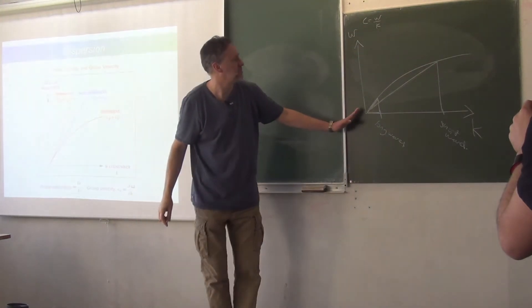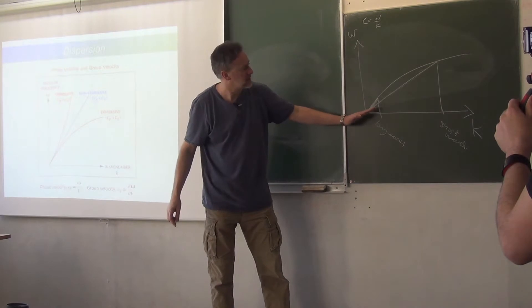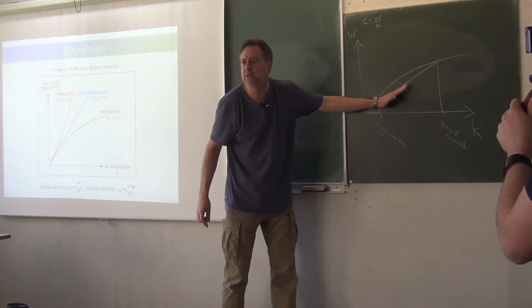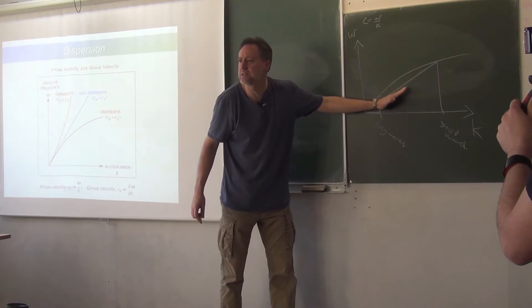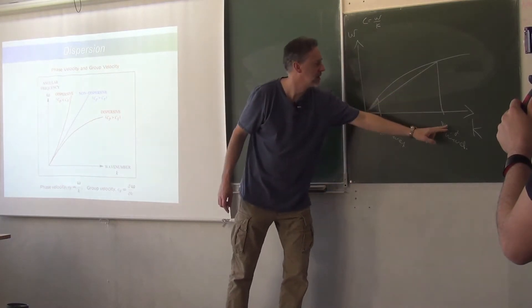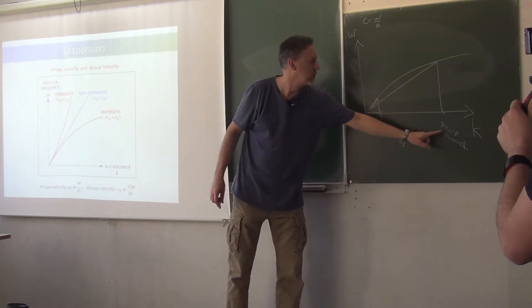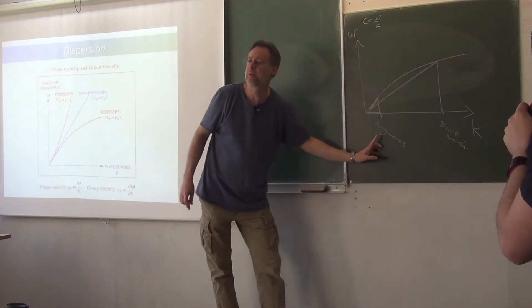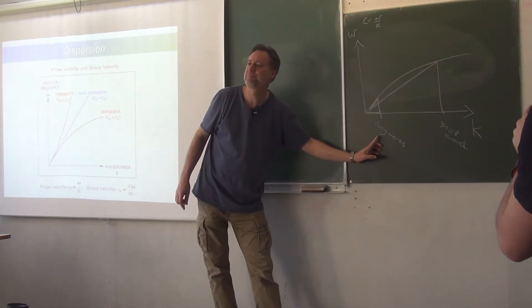So, you can see the phase speed is changing, and as the waves get shorter, this slope is getting less. So, the phase speed is decreasing with k. The short waves are slower than the long waves.